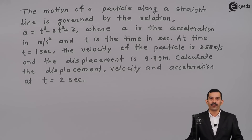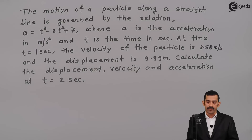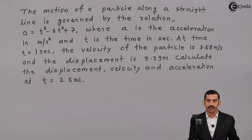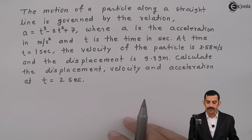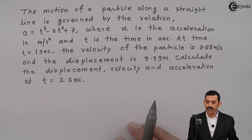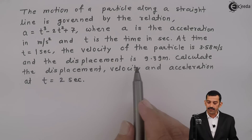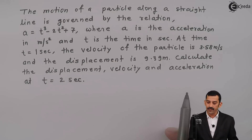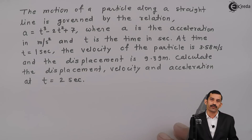Hi friends, we will solve a problem on variable acceleration. The motion of a particle along a straight line is governed by the relation A = t³ - 2t² + 7, where acceleration A is in meters per second squared and t is the time in seconds. At time t = 1 second, the velocity of the particle is 3.58 meters per second and the displacement is 9.39 meters. Calculate displacement, velocity, and acceleration at t = 2 seconds.